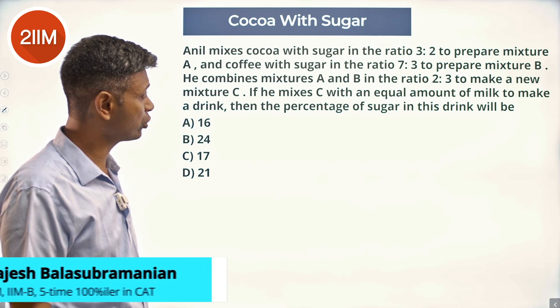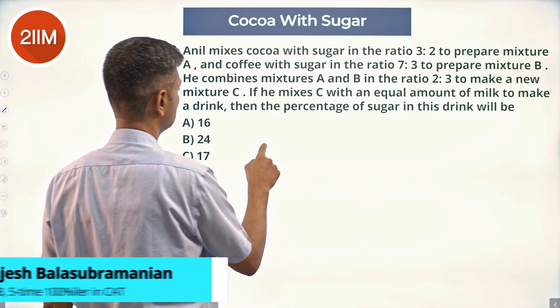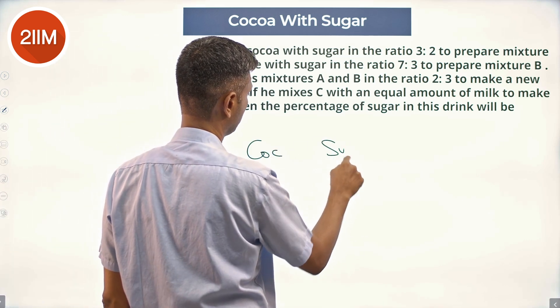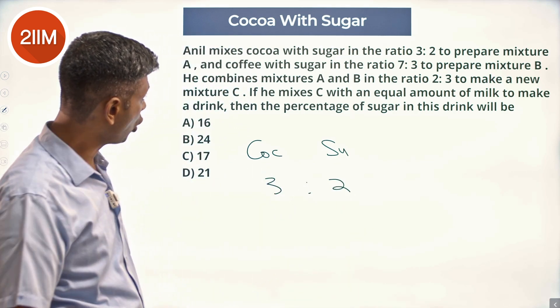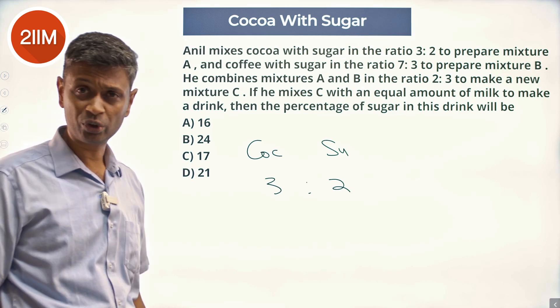Anil mixes cocoa with sugar in the ratio 3 to 2 to prepare mixture A. Cocoa with sugar 3 to 2, and coffee with sugar in the ratio 7 to 3.